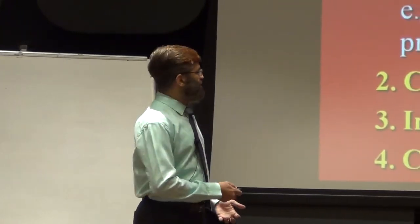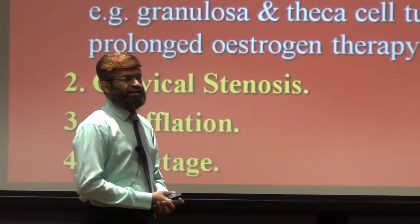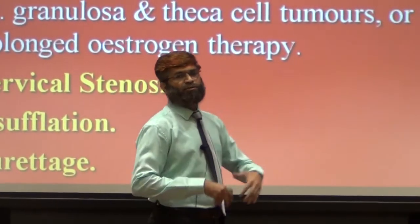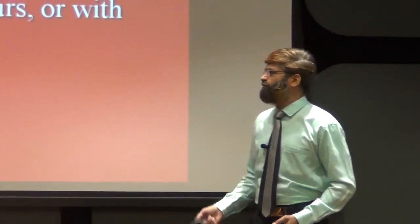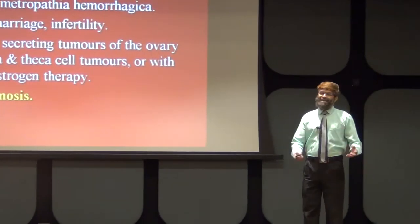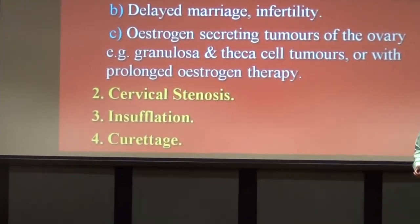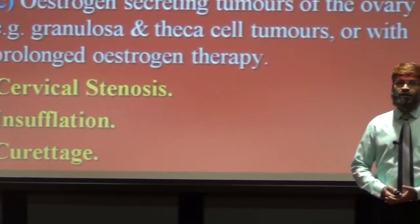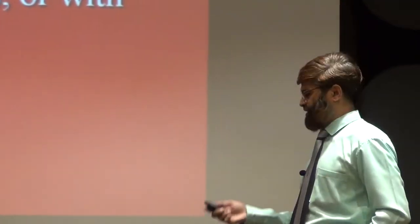Insufflation and curettage are also predisposing factors. Insufflation is an investigation done to understand the patency of the uterine tubes; if such investigations are done, the female may develop endometriosis as a complication. Curettage — that is dilation and curettage — done for MTP as a therapeutic purpose or for diagnostic purposes like DUB, leads to irritation of the uterine cavity, and in the future these females may develop endometriosis.